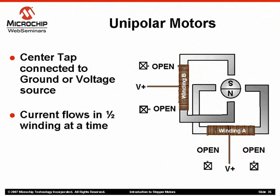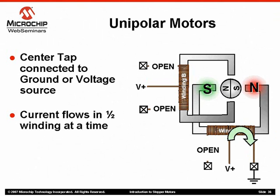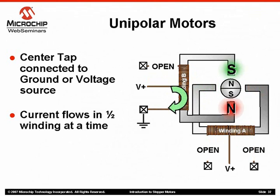Let's take a closer look at how the unipolar type of motor works. The center tap lead is connected to a positive voltage source in this example. Driving one of the leads on winding A to ground allows current to flow in one half of the winding, generating a polarity on the stator poles and the rotor rotates accordingly. Next, the grounding source is removed from the winding A lead and one of the winding B leads is driven to ground. Again, current flows in half the winding and the appropriate stator poles are energized. This continues to rotate the motor 360 degrees.